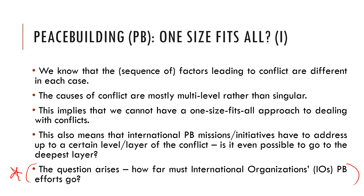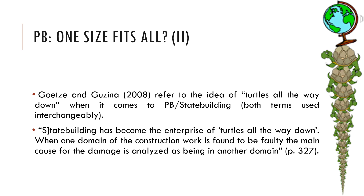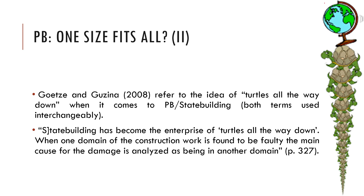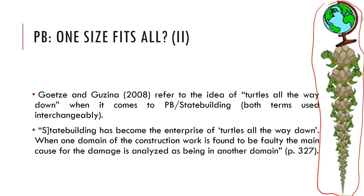What preconditions exist for ensuring sustainable peace? The answer sort of boils down to the idea of 'turtles all the way down,' as referred to by the Goetz and Guzina reading. They argue that peacebuilding — because they use the terms interchangeably with state-building — has become the enterprise of turtles all the way down. When one domain of the construction work is found to be faulty, the main cause for the damage is analyzed as being in another domain. That's one way they are conceptualizing peacebuilding in terms of its practicality over the course of UN history.